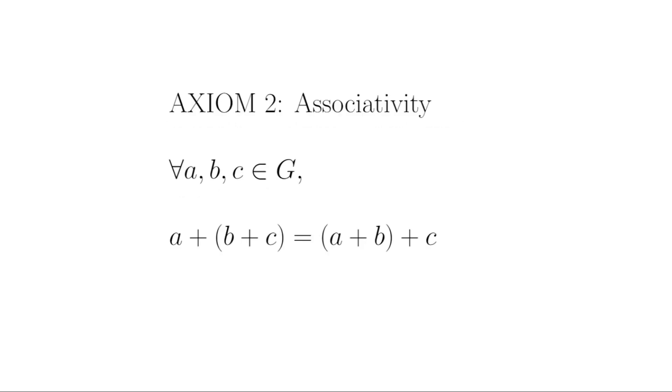Group axiom two, associativity. By associativity I mean that for any A, B, and C in G, (A + B) + C is equal to A + (B + C). In other words, as long as you don't reorder the terms, the order in which you sum is irrelevant.